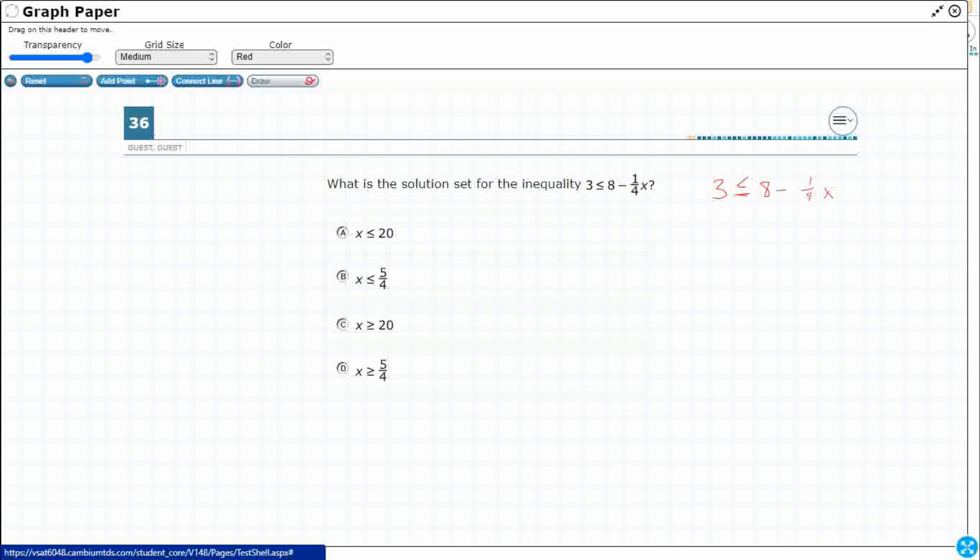When we're looking at how to isolate the variable, we look at our order of operations: Please Excuse My Dear Aunt Sally. We look at it in those four stages and go from the bottom up, because the addition and subtraction are the weakest operations that we can remove first.